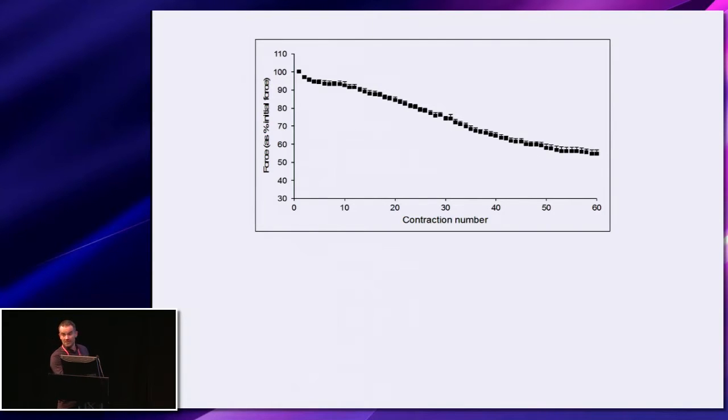We have electrically stimulated during isometric contractions the muscle 60 times within two minutes, and there's a very clear decrease in the force, the sternal force that's produced.